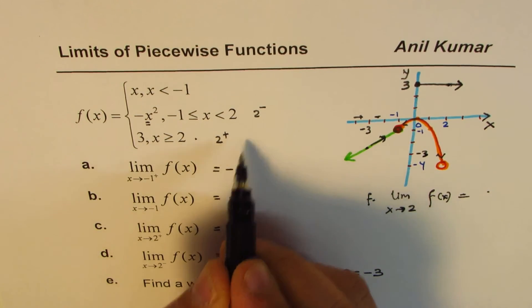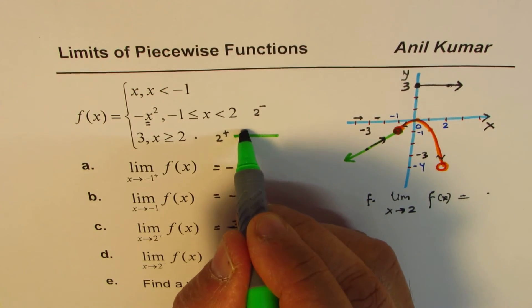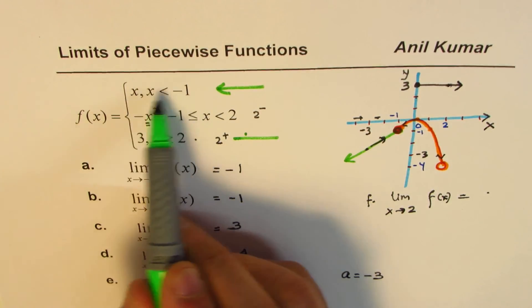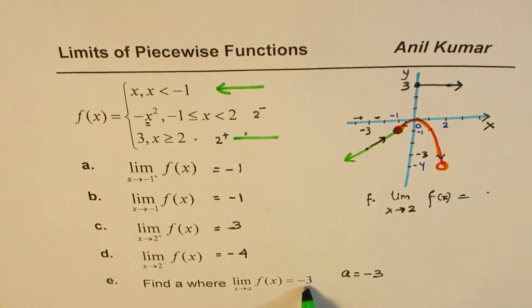So it is in this part of the graph. I'm sorry, this part of the graph, when x is going towards -3, from left or positive side, you approach -3. So the answer here is a equals to -3.